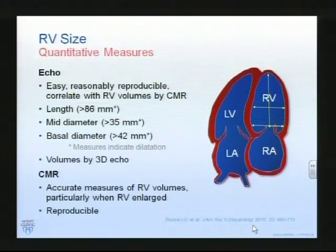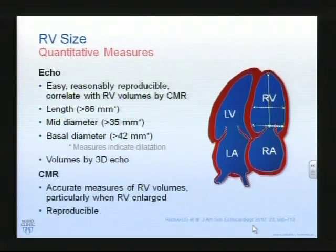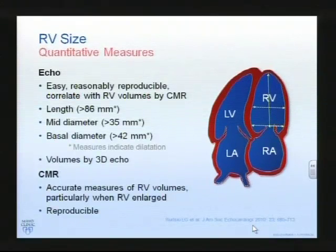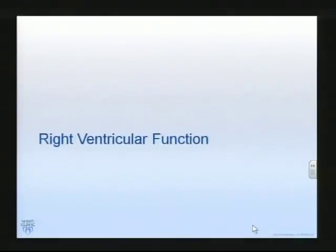You can measure right ventricular size relatively easily as illustrated here. The advantages of ECHO are that it's easy to obtain, and it's arguably a little cheaper than cardiac MR. Cardiac MR has typically been used for its more precise measurement of right ventricular volumes when it's available. But it's all about right ventricular function. Basically, patients die because their right ventricle fails, which can manifest as acute heart failure or as fatal arrhythmia in these patients.